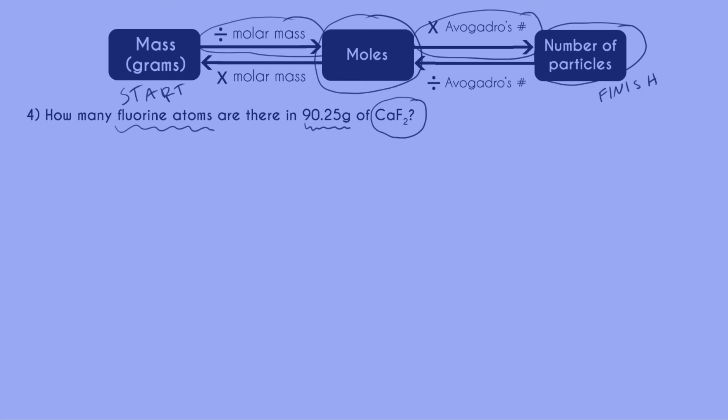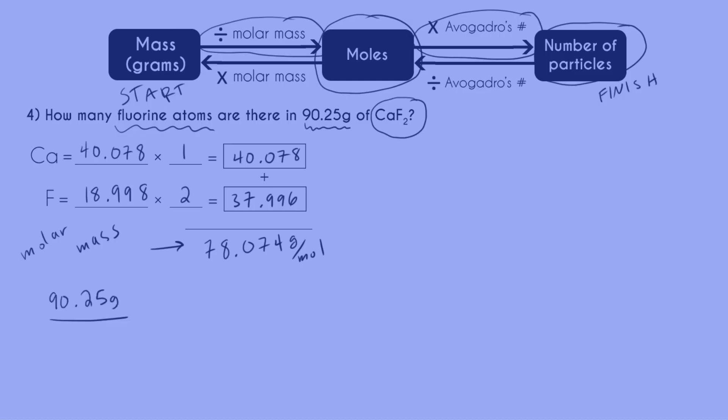So step number one is to divide by the molar mass, which means once again, I have to have the molar mass. So my molar mass is 78.074 grams per mole. And now I can go ahead and divide my number of grams by my molar mass. And again, I'm going to go ahead and show you what it's like to multiply by the reciprocal of the molar mass instead of just dividing it so we can see the units cancel out. So our number in grams goes down here, moles goes on top, cancel out grams.